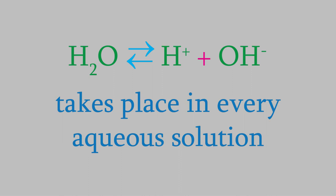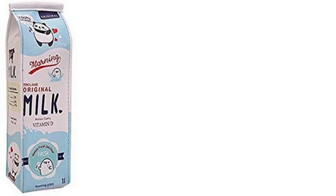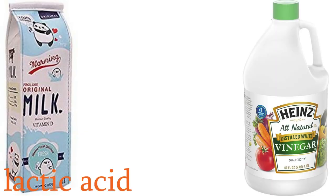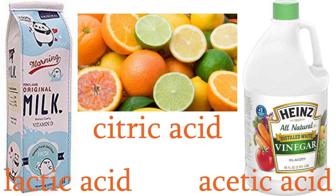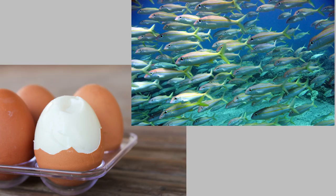You may have noticed that many kinds of food contain acids. For example, milk contains lactic acid, vinegar contains acetic acid, and lots of fruits contain citric acid. On the other hand, there aren't very many foods that are basic. Egg whites and fish are the two main ones you might eat, but even those are pretty close to neutral.